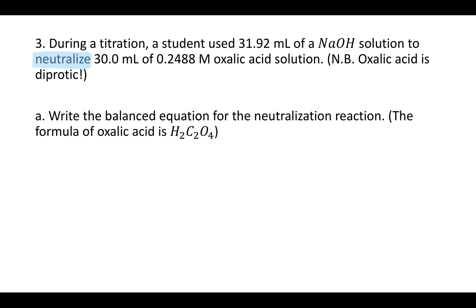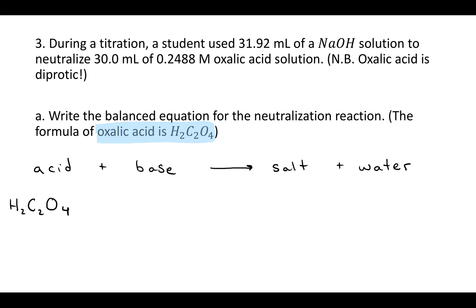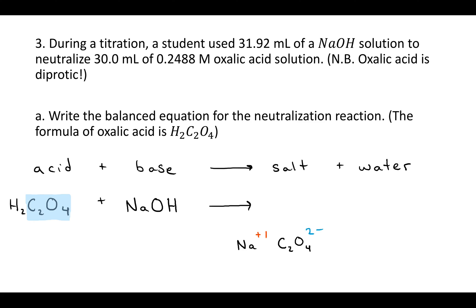The first part of the question says to write the balanced equation for the neutralization reaction. The formula of oxalic acid is H₂C₂O₄ — you can see those two H's, which is why it's diprotic. A neutralization reaction always takes the general form: acid plus base gives you a salt plus water, where a salt is any ionic compound — a metal and a nonmetal. Our acid is H₂C₂O₄ and our base is NaOH. To get the salt, you take the cation from the base — sodium, which has a +1 charge — and the anion from the acid, which is oxalate with a charge of negative two.